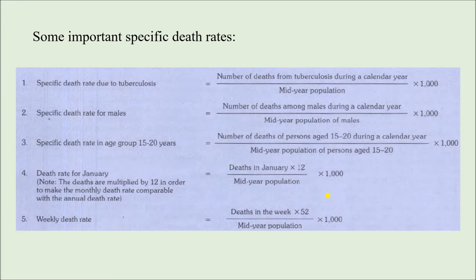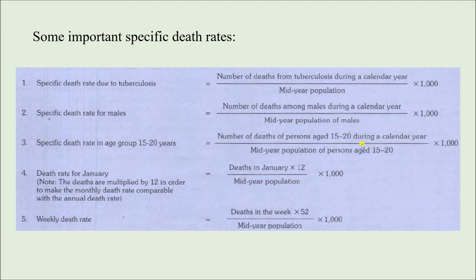Here are some examples of specific death rates. Specific death rate due to tuberculosis: numerator is the number of deaths from tuberculosis during a calendar year, divided by mid-year population, multiplied by 1000. Specific death rate for males: total number of deaths among males in a calendar year divided by mid-year male population, multiplied by 1000. These are mentioned in the textbook and are easy to understand.